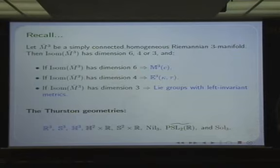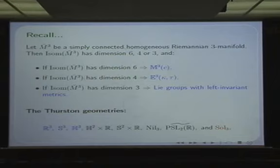Sol₃ has compact quotients and a maximal group of isometries. The theory of CMC surfaces is classically developed in these spaces. The natural question is: what happens with Sol₃? What is the geometry of CMC surfaces in the three-dimensional space Sol₃?